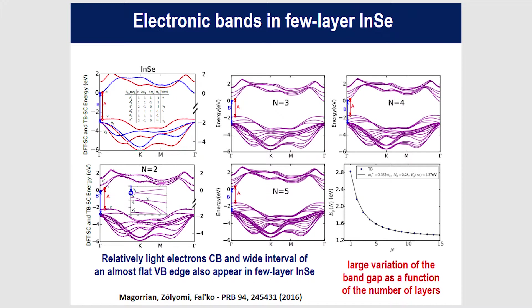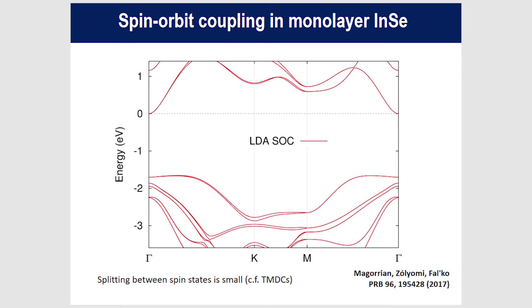Spin-orbit coupling has a small effect on the gap and conduction band — unlike traditional metal dichalcogenides where you have splitting of several hundred meV at the band edge. Even at the K point the splitting is quite small. However, looking at deeper bands at the gamma point — formed of PX and PY orbitals that were degenerate — these are quite strongly split by spin-orbit coupling, which matters for optical selection rules.